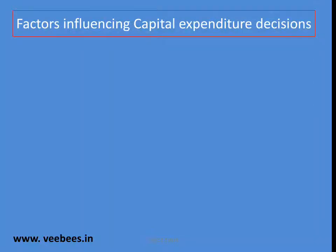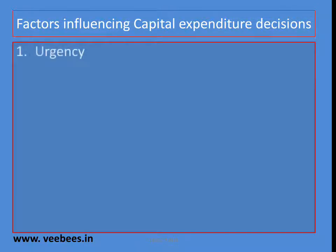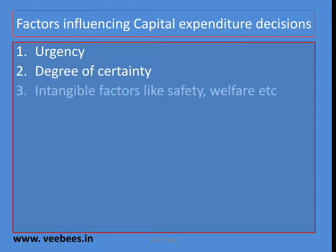The next topic is factors influencing capital expenditure decisions. These factors will directly influence our decision. The first important factor is urgency — we will always invest in projects that are more urgent. The second is degree of certainty — we prefer proposals with certain, fixed cash inflows over uncertain ones. Then intangible factors such as safety of employees, welfare of employees, and availability of raw materials are also considered.